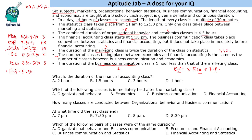We are left with financial accounting. Using the total duration of 14 hours: the day starts at 6:30 and should end at 8:30 PM. Financial accounting runs from 5:30 to 8:30 PM, which is three hours.